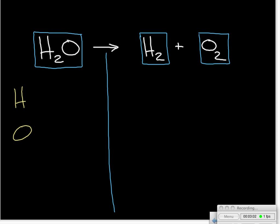Our next step is to draw a vertical line underneath the arrow, because the arrow is our dividing line between before and after. We've got our reactants on the left-hand side and our products on the right-hand side. We then list the individual elements present in this equation — hydrogen and oxygen — and we start with an element that shows up in the fewest number of compounds. Since both show up twice, we'll start with hydrogen reading left to right.